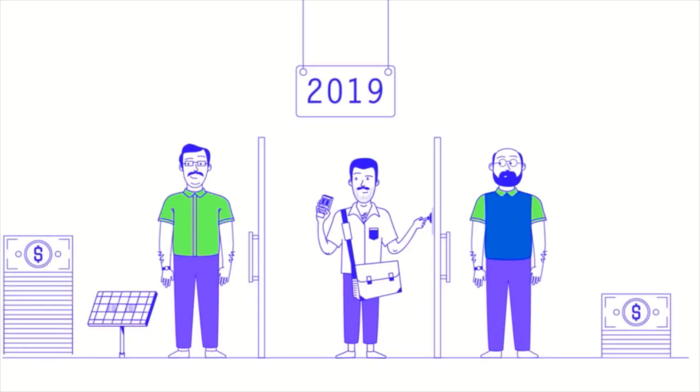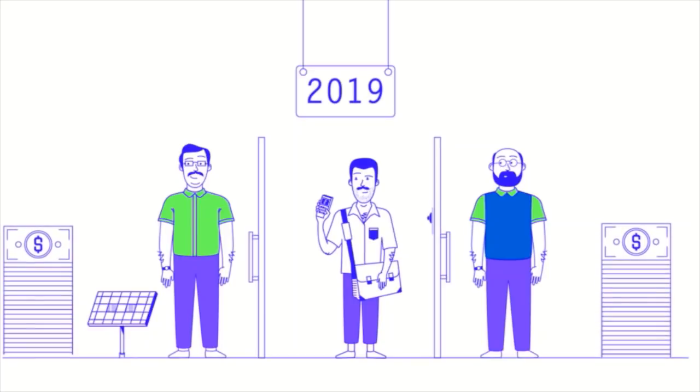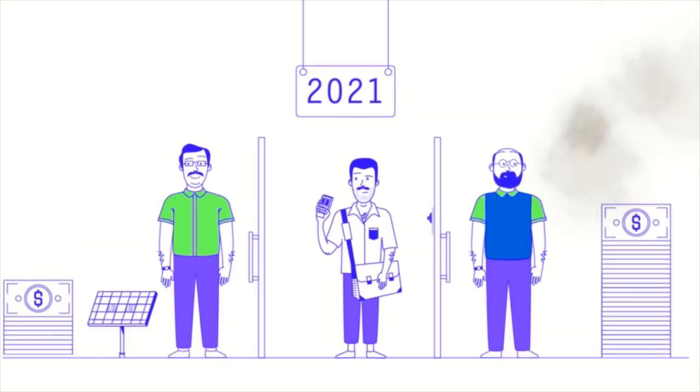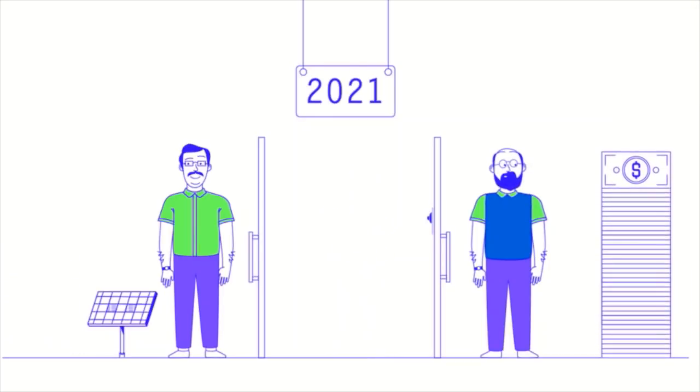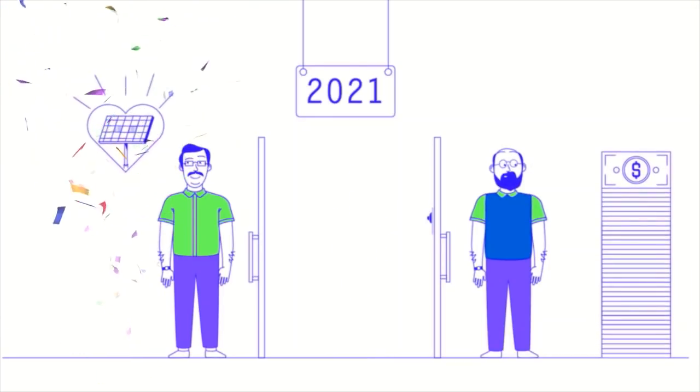In the third year, with the increase in electricity prices, Mustafa is now paying less than Ahmed. His savings keep increasing in year four, and by year five, Mustafa has now reached his return on investment.